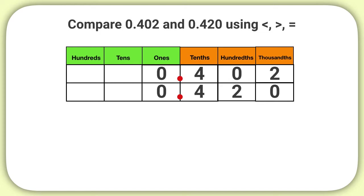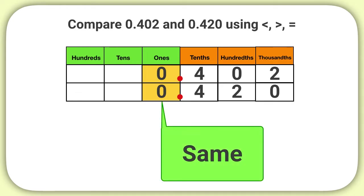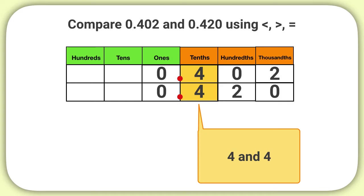I'll start by comparing the numbers in the largest place value first, which is the ones place. Are the digits in the ones place value the same or different? They are the same. Since they're the same, I can now look to the right at the next largest place value in the chart, which is the tenths place. I see a 4 and a 4.